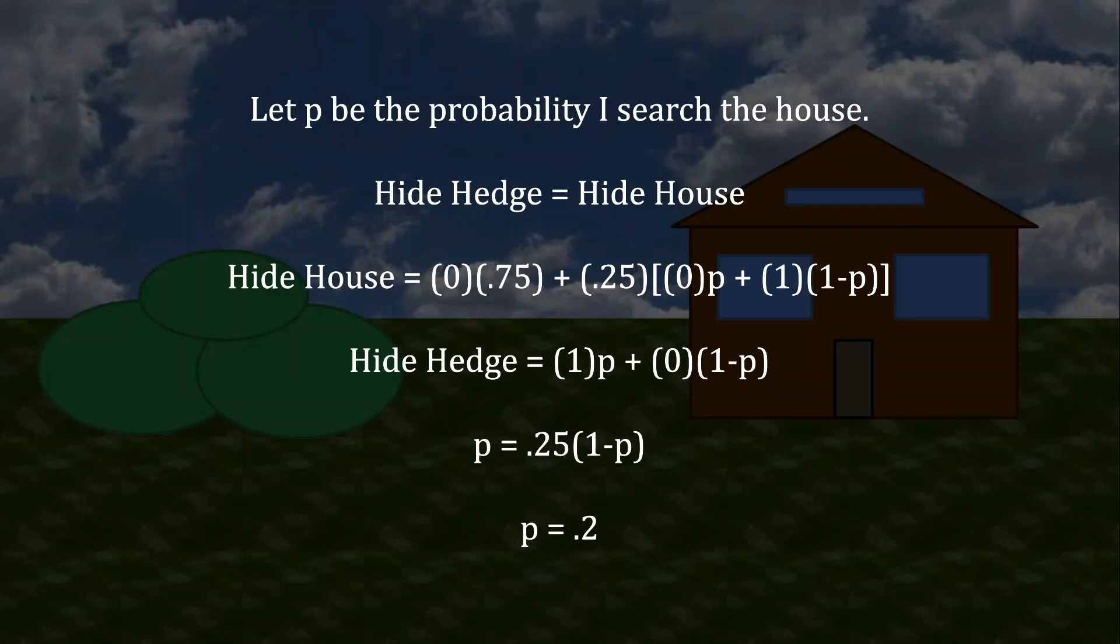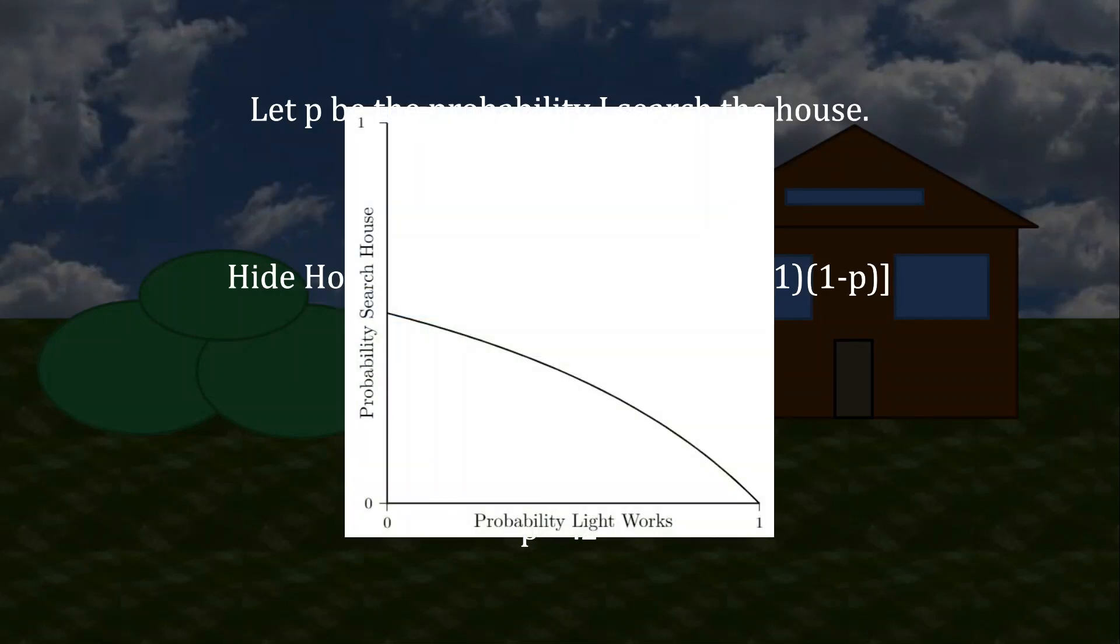Furthermore, we can see how this relationship generalizes in this figure. On the horizontal axis, I have the probability that the light works, and on the vertical axis, I have the probability that I search the house. When the probability that the light works is 0, that's essentially the original problem from before, we see that I'm doing an even split, 50-50. But as the light becomes more effective, I start searching the house less frequently. And indeed, when the light is perfectly effective, I never search the house at all.